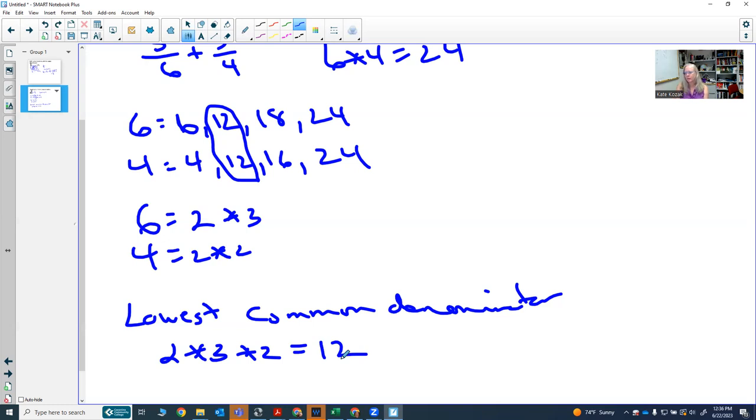Both methods give you the same lowest common denominator. A reminder, if you can't find the lowest common denominator, just find any common denominator. There's nothing magical about the lowest common denominator.